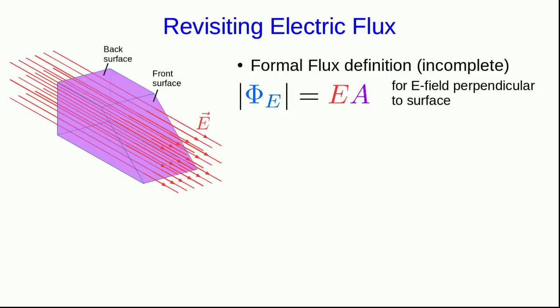There's a back surface and a front surface. There's a constant E field in this region, and it's passing into the back surface and out of the front surface. And note in particular that the back surface is perpendicular to the field.